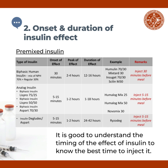Insulin degludec and aspart is a mixture of a long-acting and a rapid-acting insulin, similar to other biphasic insulins. The onset of effect is at 5 to 15 minutes and the peak effect is at 1 to 2 hours. Because of the degludec component, its duration of effect is 24 to 42 hours. However, because of the aspart component, this is injected 5 to 15 minutes before meals.